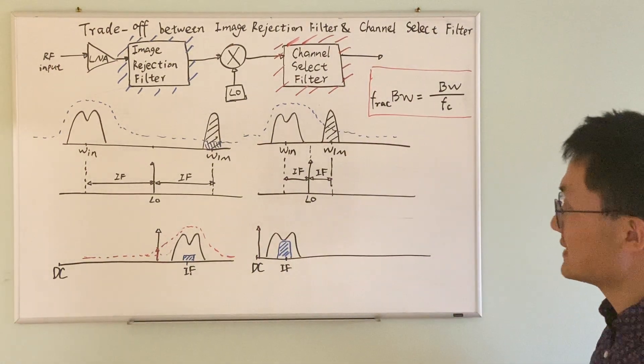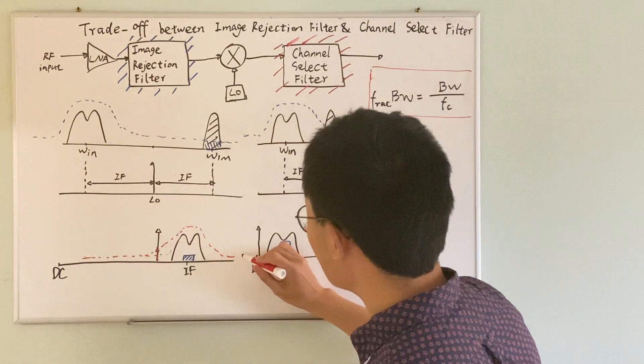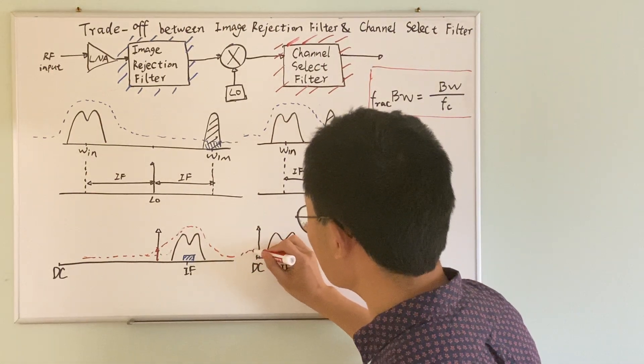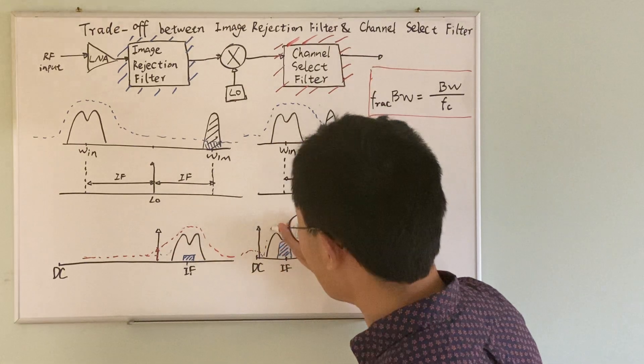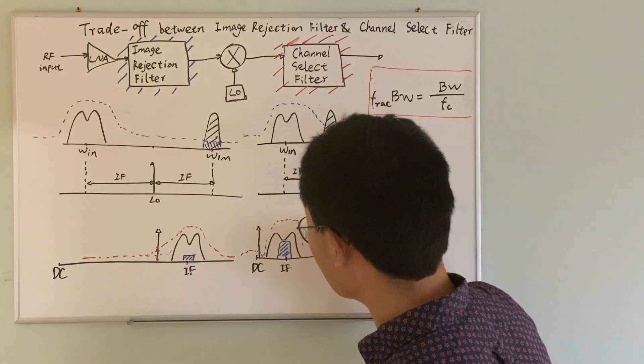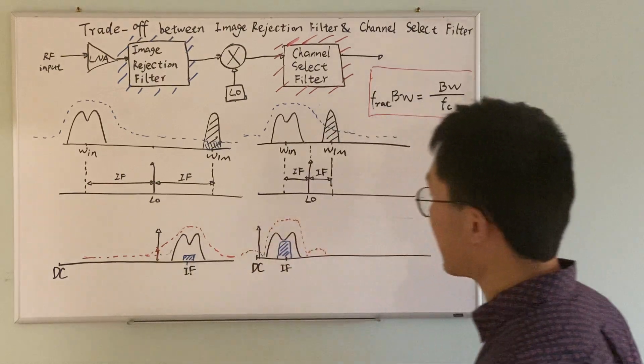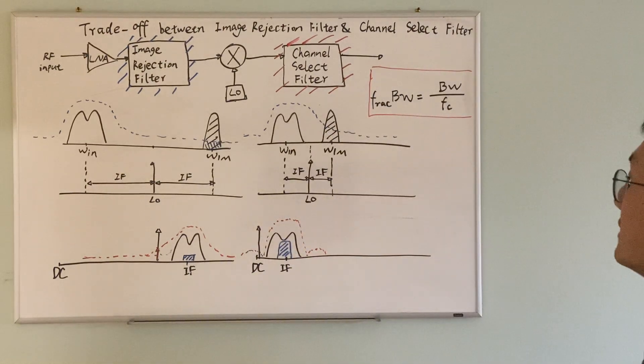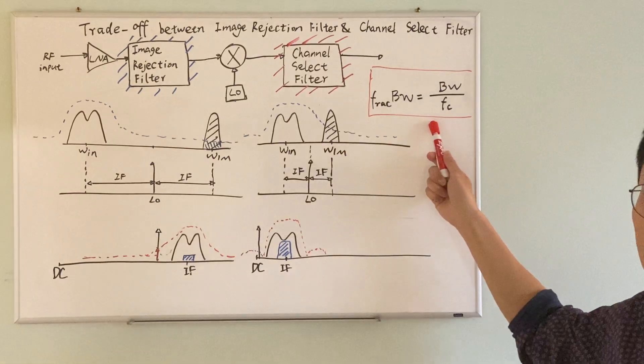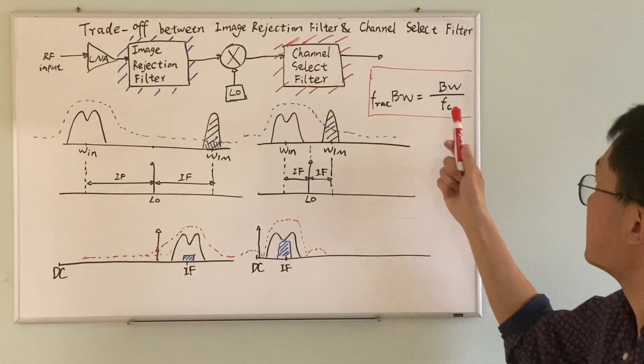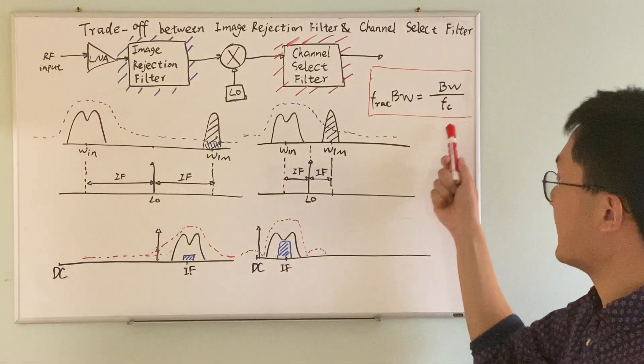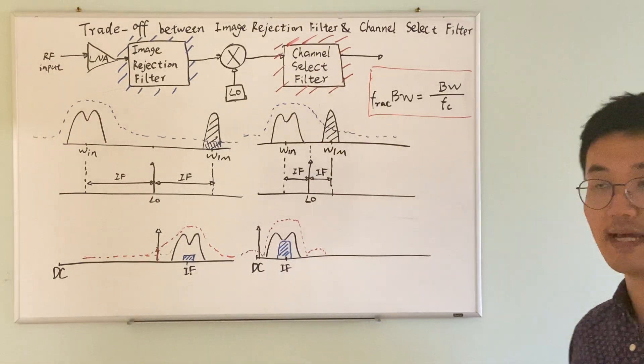So in this scenario, it is very feasible to design a channel select filter that picks out the useful information exactly. Why? Because based on the fractional bandwidth rule, the ratio of the bandwidth and the center frequency remains the same.